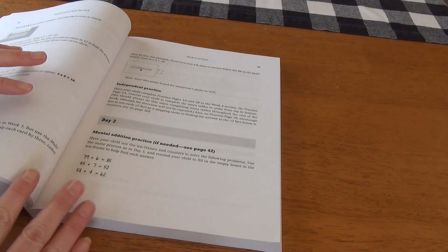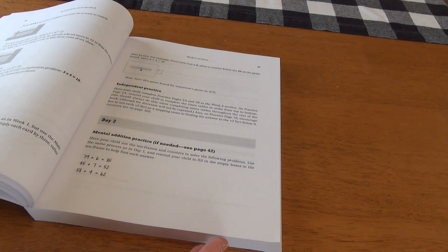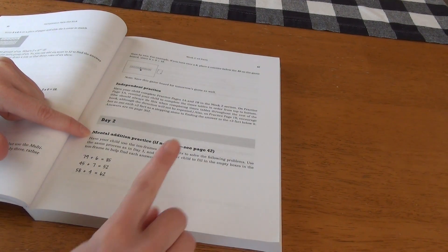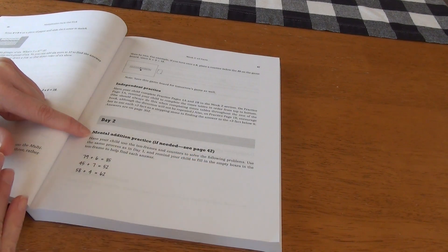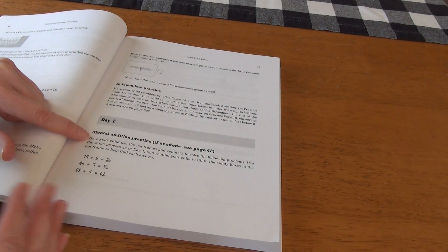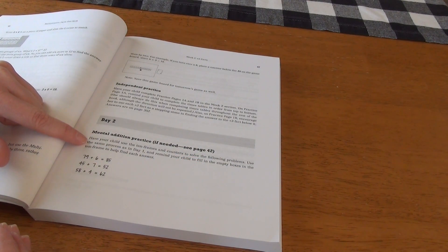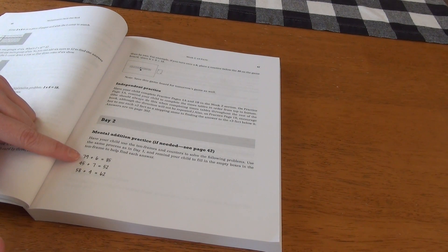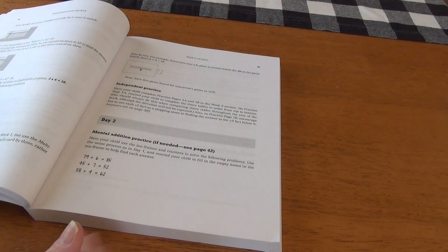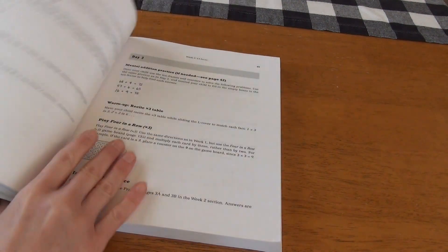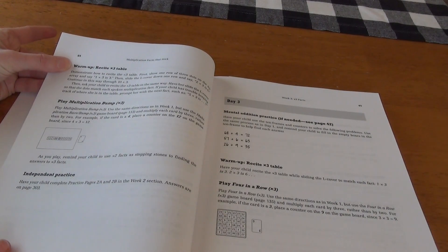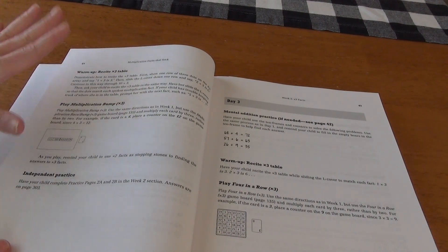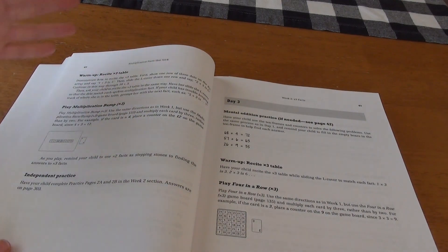Some of the day ones look a little bit longer than others. The next week looks a little bit shorter. Mental addition practice, again, see the front of the week if you need a little bit more instruction on extra practice. And then we're going to have the child use 10 frames and counters to solve the following problems. You're going to use the same process as in day one. We have our warmup and recite, play the multiplication bump, independent practice. That's the end of day two.